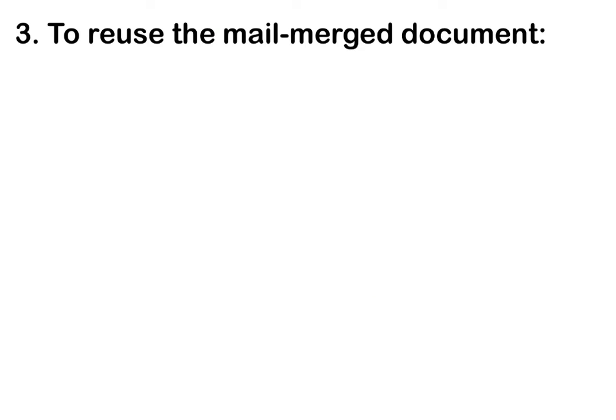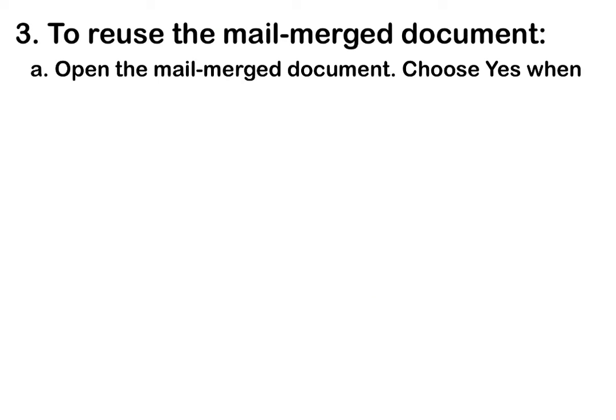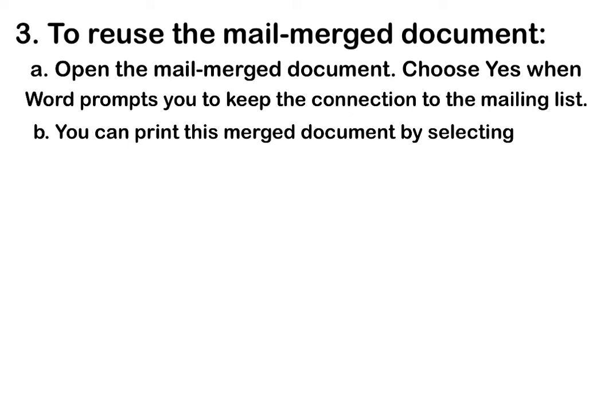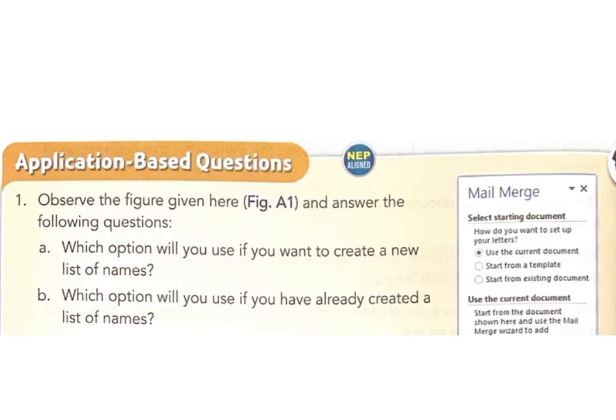C: How can you reuse a merged document in Word? Answer: To reuse the mail merged document: A) Open the mail merged document and choose Yes when Word prompts you to keep the connection to the mailing list. B) You can print this merged document by selecting the Print option on the File tab.